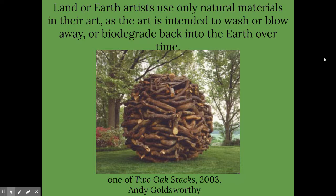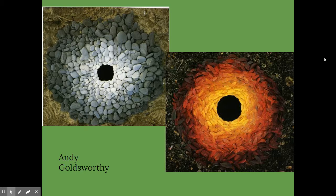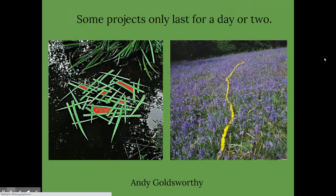This is called Two Oak Stacks by Andy Goldsworthy. Another Andy Goldsworthy work where he worked with rocks and leaves and there was a gradation of color, kind of an ombre effect from white to black. And on the other one, it's orange to red, which would be considered warm colors.